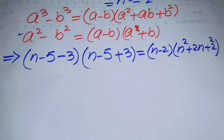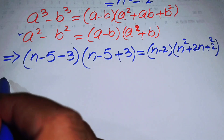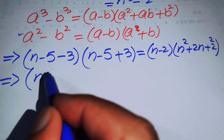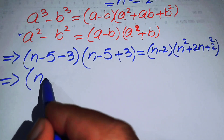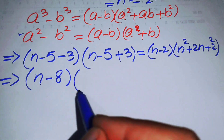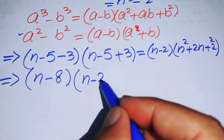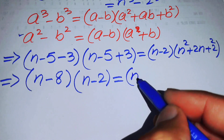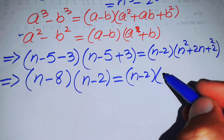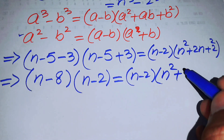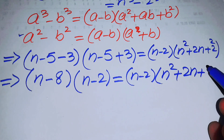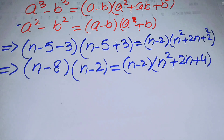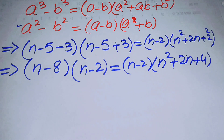After applying both formulas, the left-hand side becomes (n - 8)(n - 2) and the right-hand side becomes (n - 2)(n² + 2n + 4).